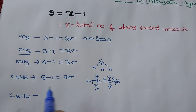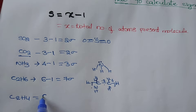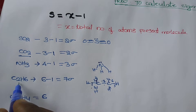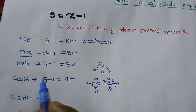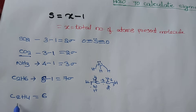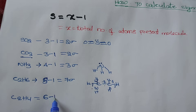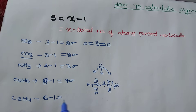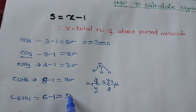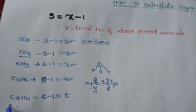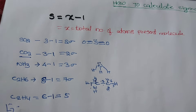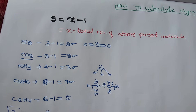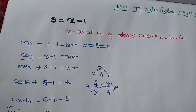Next, C₂H₄. The total number of atoms is six. So six minus one equals five sigma bonds. There are four hydrogens and two carbons, so five sigma bonds should be there.